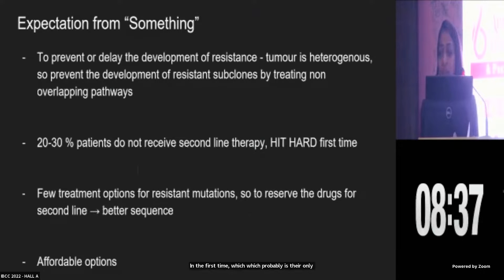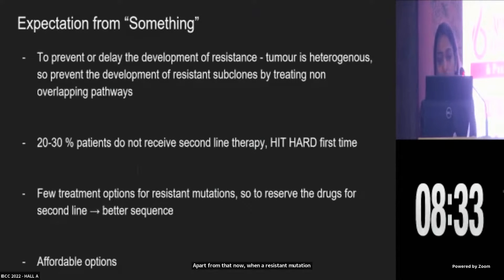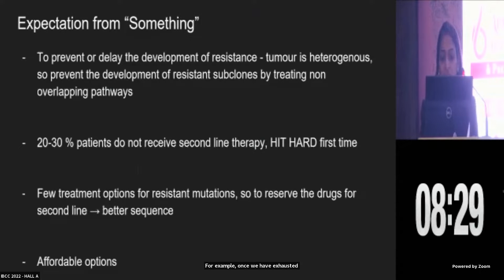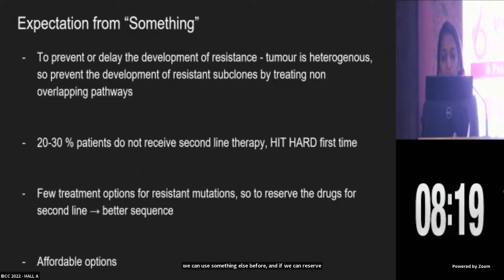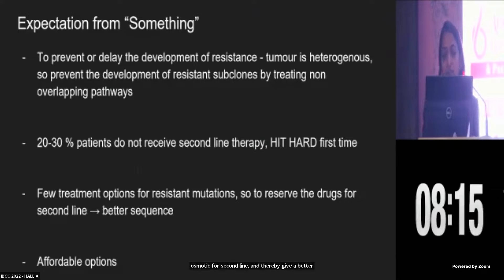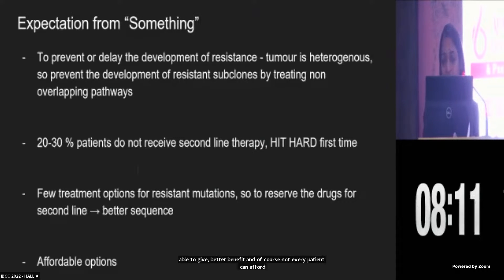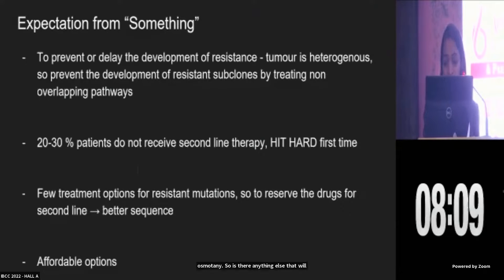Apart from that, when a resistant mutation develops — for example, once we have exhausted using osimertinib in the first line — we do not have any other reserve medications. So if we can use something else before and reserve osimertinib for the second line, we can give a better sequence of treatment. And of course, not every patient can afford osimertinib, so is there anything else that will give at least similar responses?